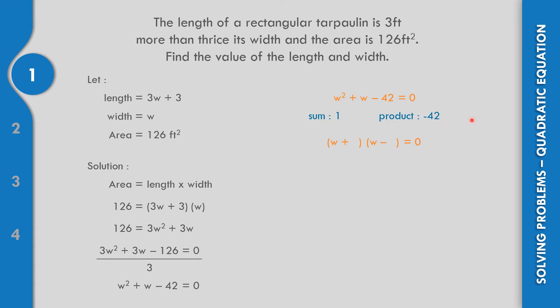Think of a factor where the product is negative 42 and the sum is 1. The factors 7 and negative 6 work: 7 times negative 6 equals negative 42. And 7 minus 6 equals 1. So the factored form is (W plus 7)(W minus 6).